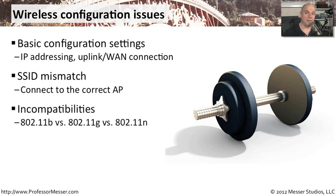If you have a large environment with many different devices, you may have some devices running at 802.11b, some at 802.11g, some at 802.11n. Some of the older equipment on B you simply can't upgrade, so you have to make sure you configure your access point to be backwards compatible with all of those. Some access points come configured to work at 802.11n only, and if you configure it that way, your devices running G or B are not going to be able to connect. There's usually a configuration change you can make that allows the access point to operate with many different standards at the same time.